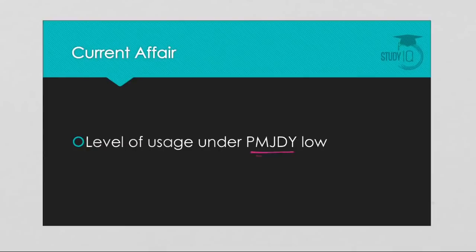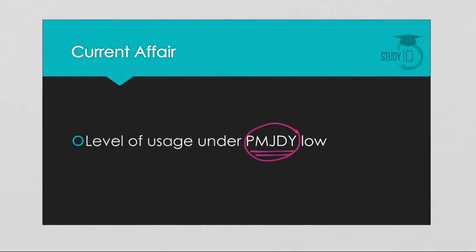Under the Pradhan Mantri Jan Dhan Yojana, the government has ensured that there is almost near universal access to bank accounts. The purpose of Pradhan Mantri Jan Dhan Yojana was to provide bank accounts to everyone in the country and the government has succeeded in this attempt to a large extent. Most of the Indian population has opened a bank account under the scheme, and its final goal was to improve financial inclusion in the country.